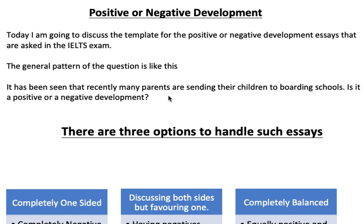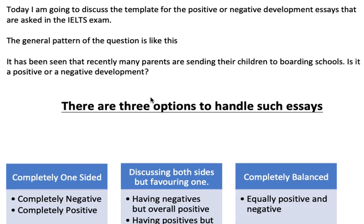The general pattern of the question is: 'It has been seen that recently many parents are sending their children to boarding schools.' This is just one example I have taken, but the general pattern always has this sentence below the top main sentence: 'Is it a positive or a negative development?' So your opinion has been asked. There are three options to handle such essays.